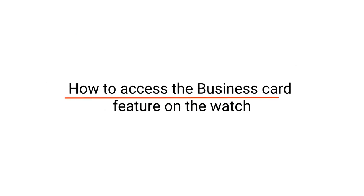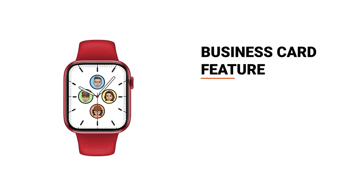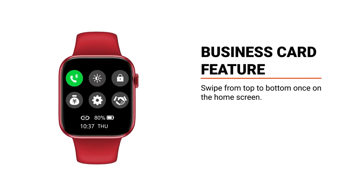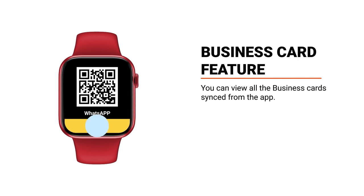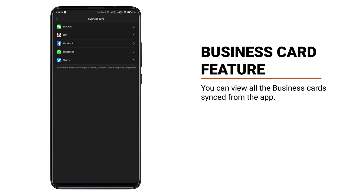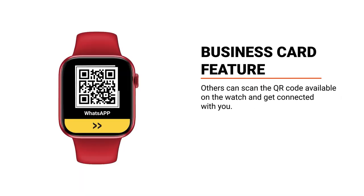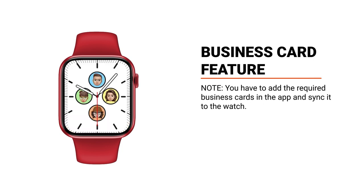How to access the business card feature on the watch: swipe from top to bottom once on the home screen. Tap on the business card option. You can view all the business cards synced from the app. Others can scan the QR code available on the watch and get connected with you. Note: you have to add the required business cards in the app and sync it to the watch.